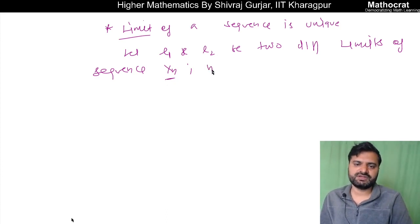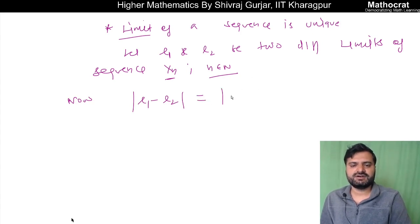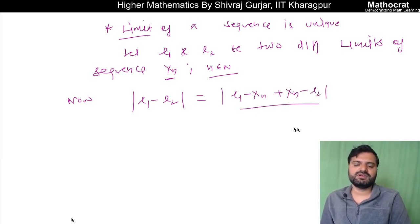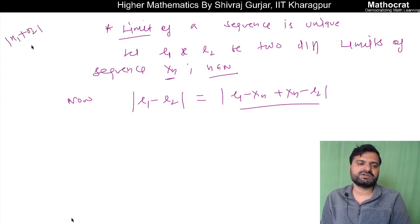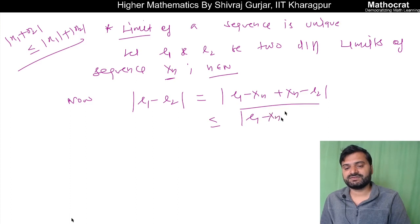Consider |L1 minus L2|. This can be written as |L1 minus xn plus xn minus L2|. By the triangle inequality, we know that |x1 + x2| is always less than |x1| + |x2|. So applying this here, |L1 minus L2| is less than or equal to |L1 minus xn| plus |xn minus L2|.